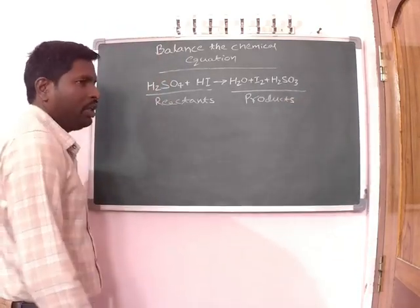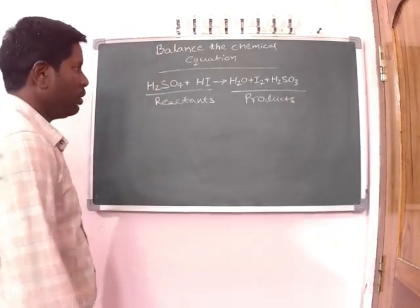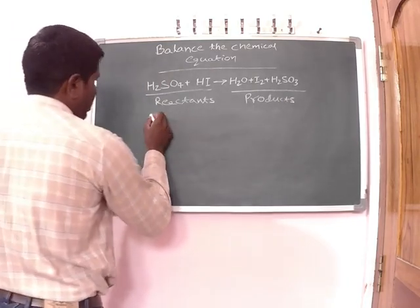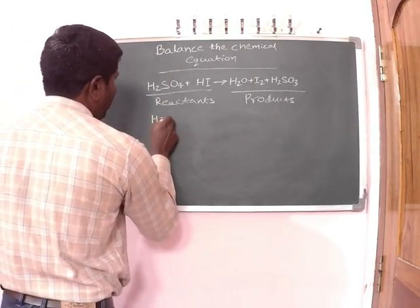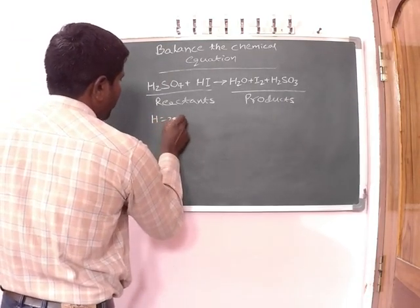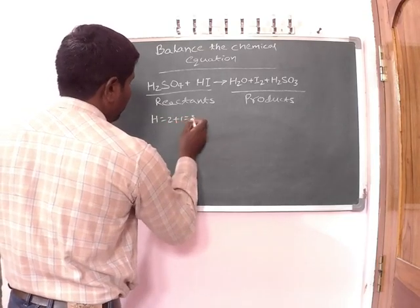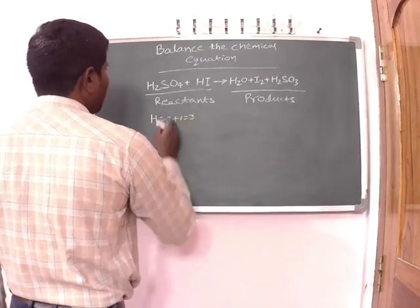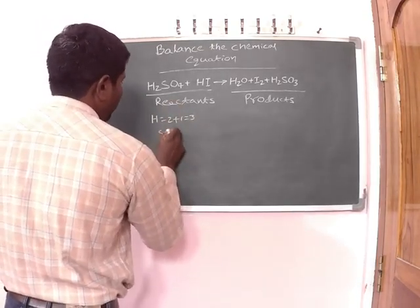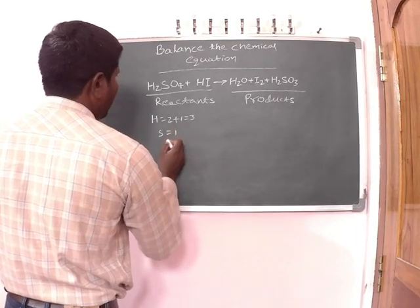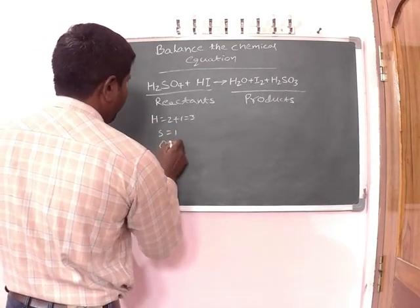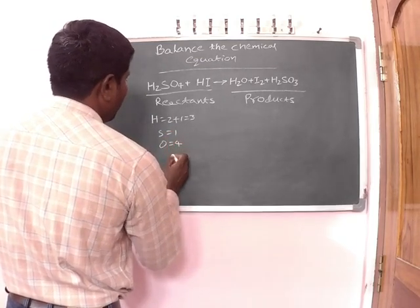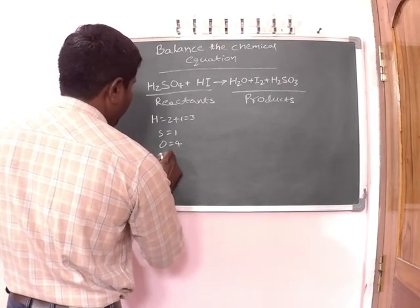Now we can balance the number of atoms in the two sides. In the reactants side, the number of hydrogen atoms is 2 plus 1, that equals to 3. The number of sulfur atoms is 1. The number of oxygen atoms is 4. The number of iodine atoms is 1.